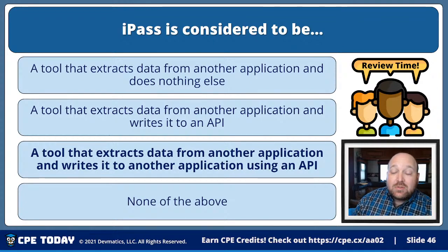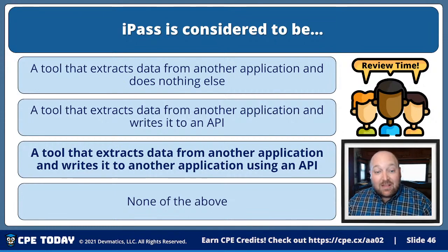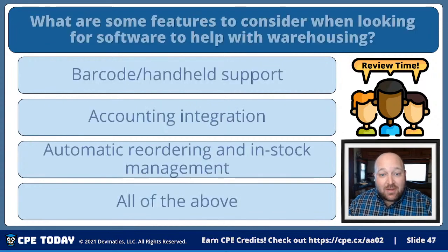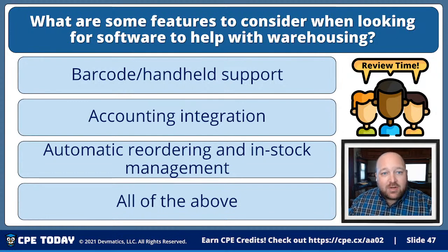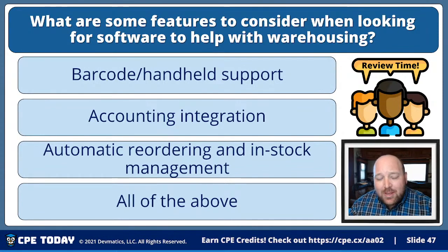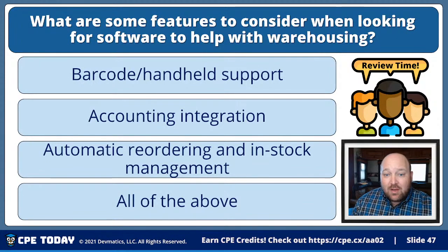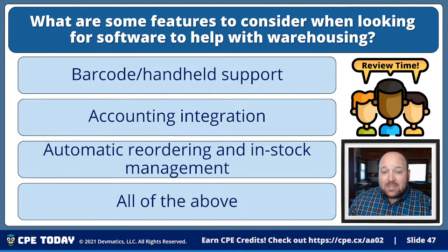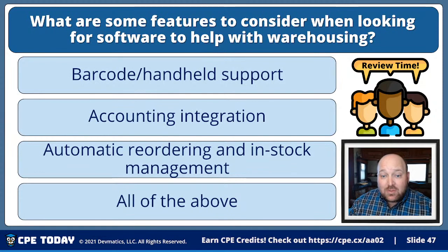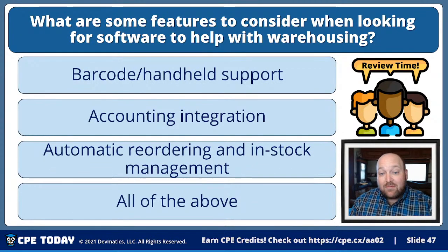Welcome back, colleagues. I hope you enjoyed our recording of amazing accounting add-on tools. Our first review question: IPaaS is a tool that extracts data from another application and writes it to another application using an API. Integration Platform as a Service lets you take data from one place and move it to another, typically using an API — a great way to do data sharing without a lot of fuss. Tools like Zapier and Power Automate are wonderful add-ons for integration. For warehousing software, key features include barcode and handheld support, RFID if warranted, accounting integration, tracking work in progress and finished goods, and automatic recording of in-stock management.